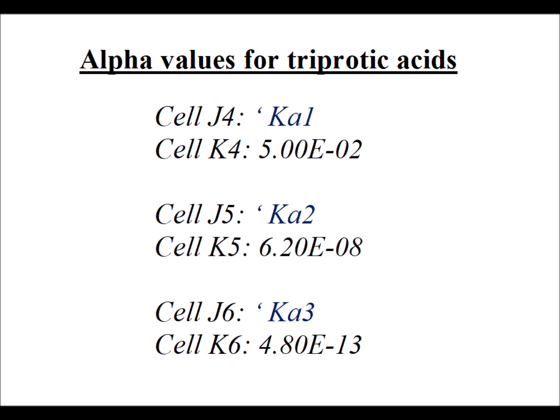In cells J4, J5, and J6, we put the labels for the Ka1, Ka2, Ka3 acid dissociation constants for a triprotic acid. And in cells K4, K5, and K6, we put down the specific values, in this case, for phosphoric acid.